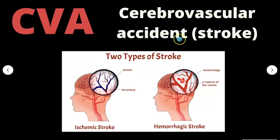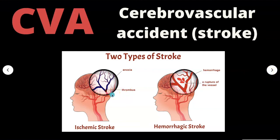CVA is cerebrovascular accident, or stroke. There are two types: ischemic, where there's a clot and the area doesn't get oxygen, causing anoxia; and hemorrhagic, where there's a rupture of the vessel and blood spews out causing a hemorrhage. It's very important to determine what kind of stroke it is because treatment varies significantly — treating a hemorrhagic stroke as ischemic by giving clot busters like TPA would cause the patient to bleed out even more. About 80% of strokes are ischemic.